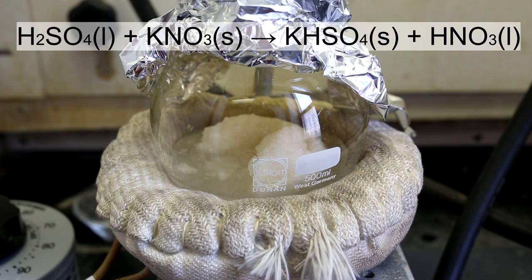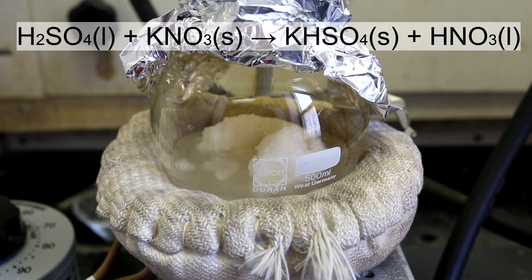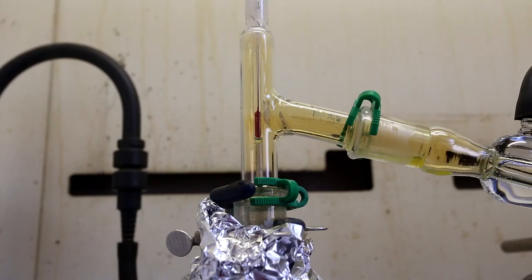In the round bottom flask, the boiling sulfuric acid reacts with the potassium nitrate according to the reaction shown above. The KHSO4 remains as a solid salt in the flask, whereas the HNO3 can be distilled off. It is very important to keep the temperature at around 83 degrees Celsius, which is the point that nitric acid boils at.